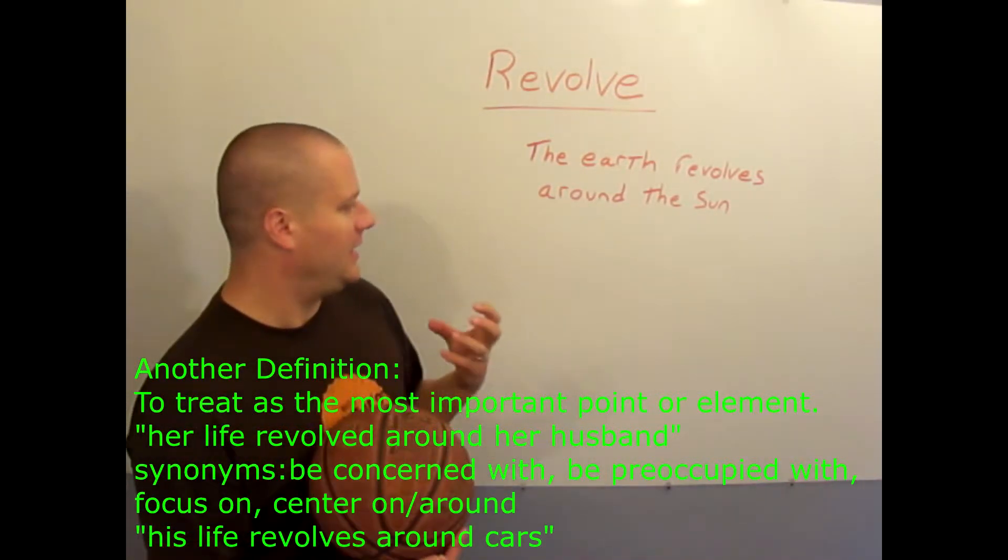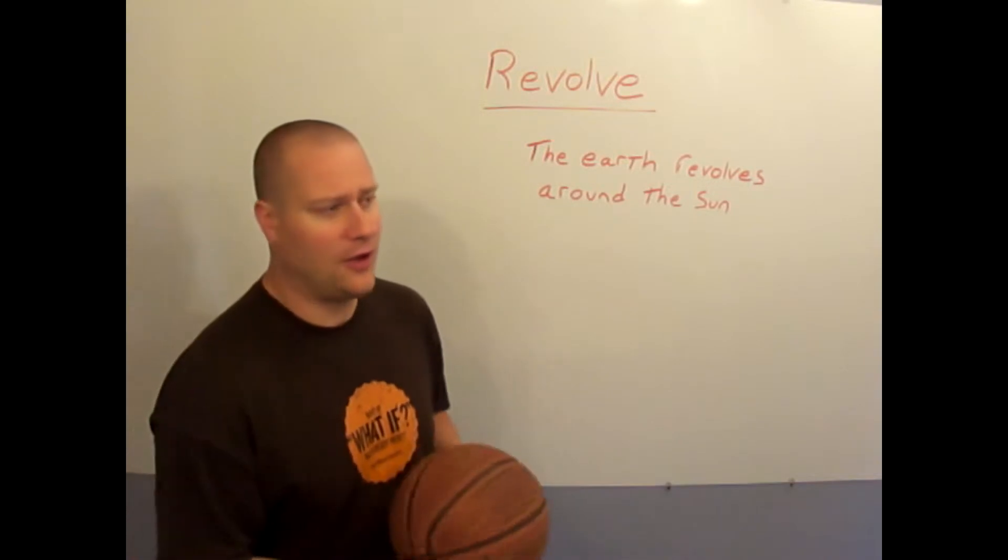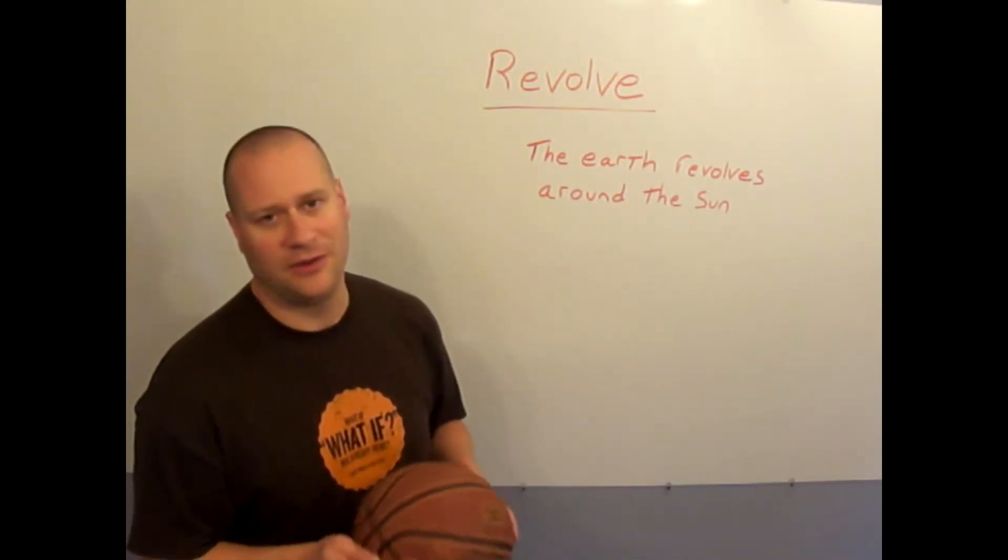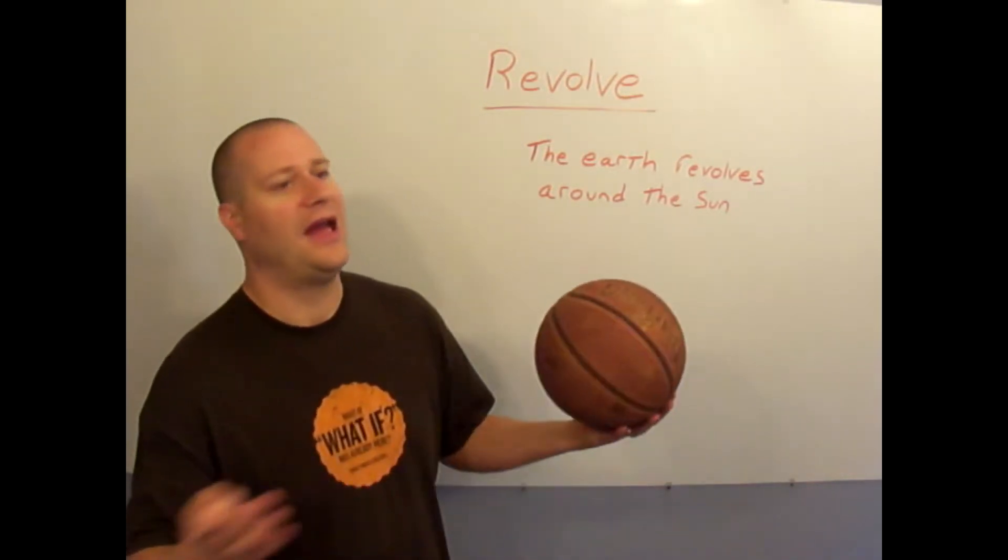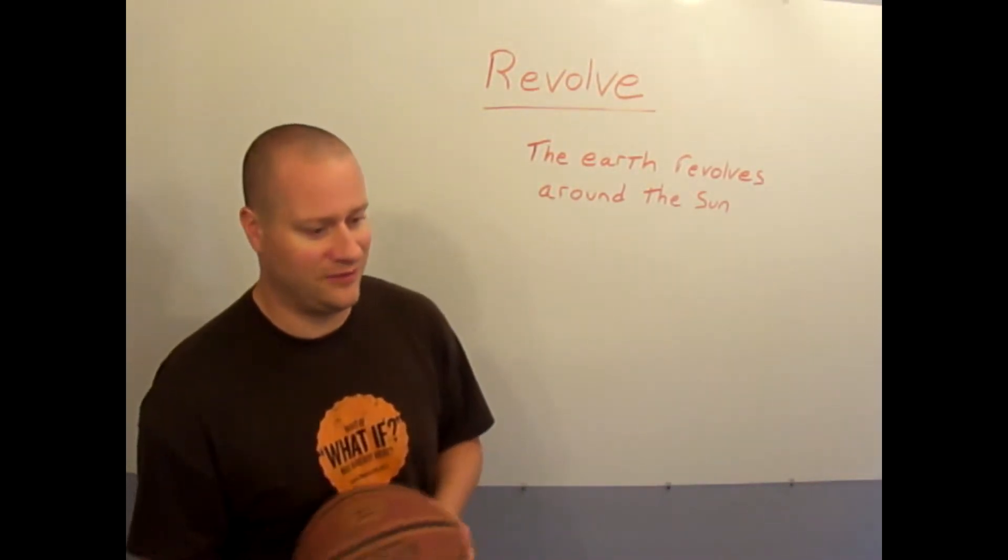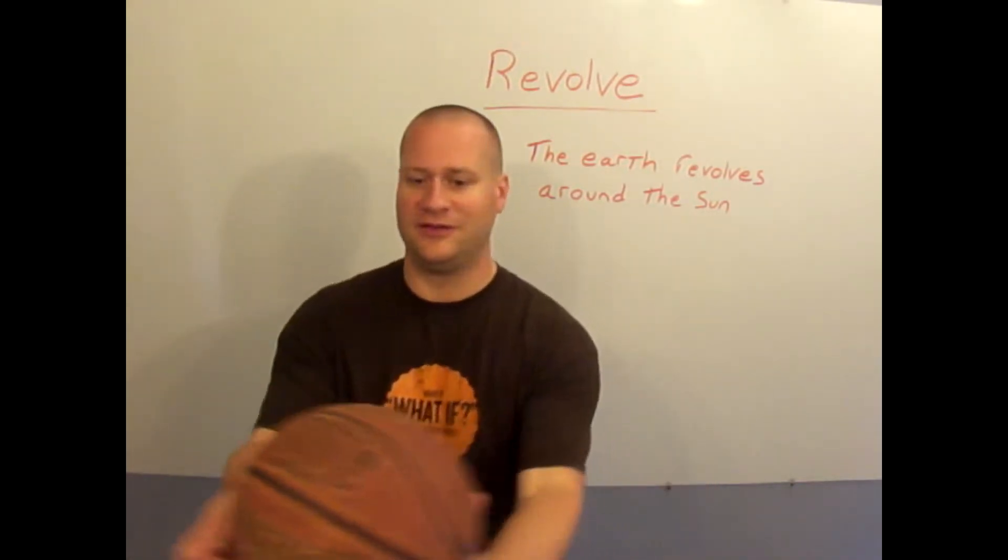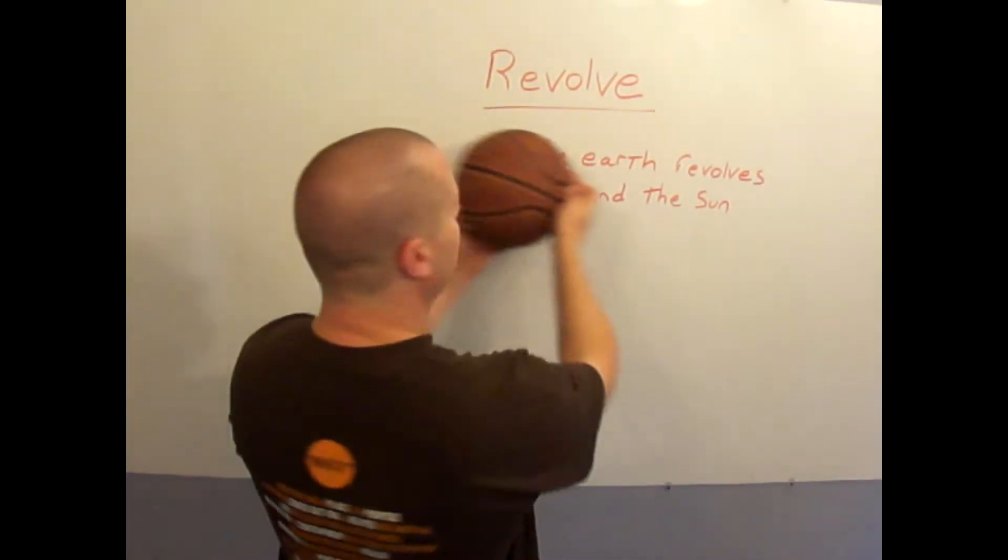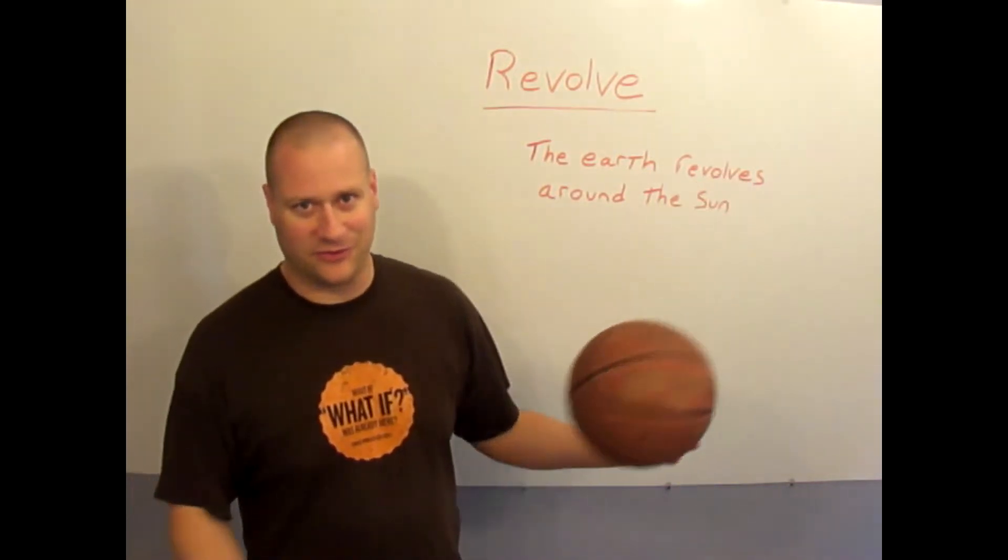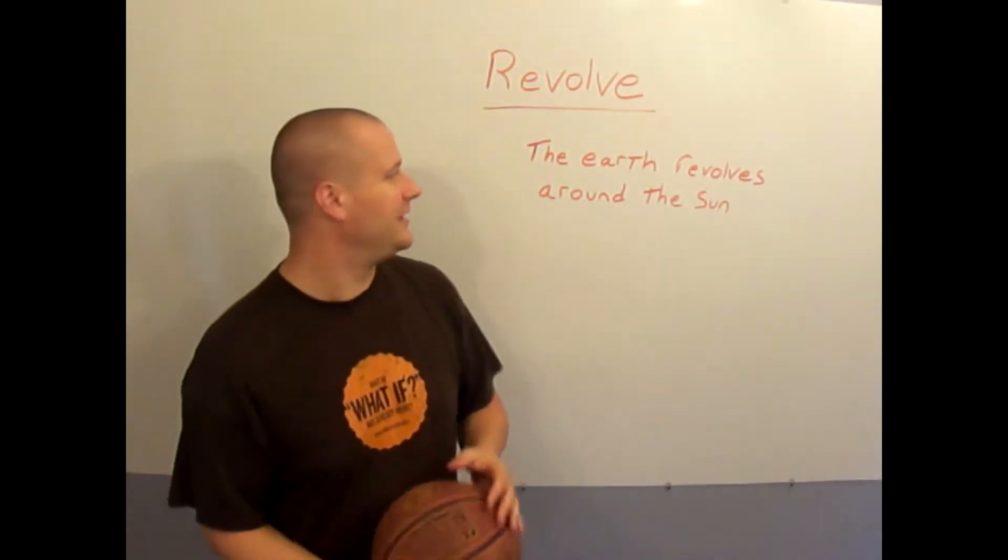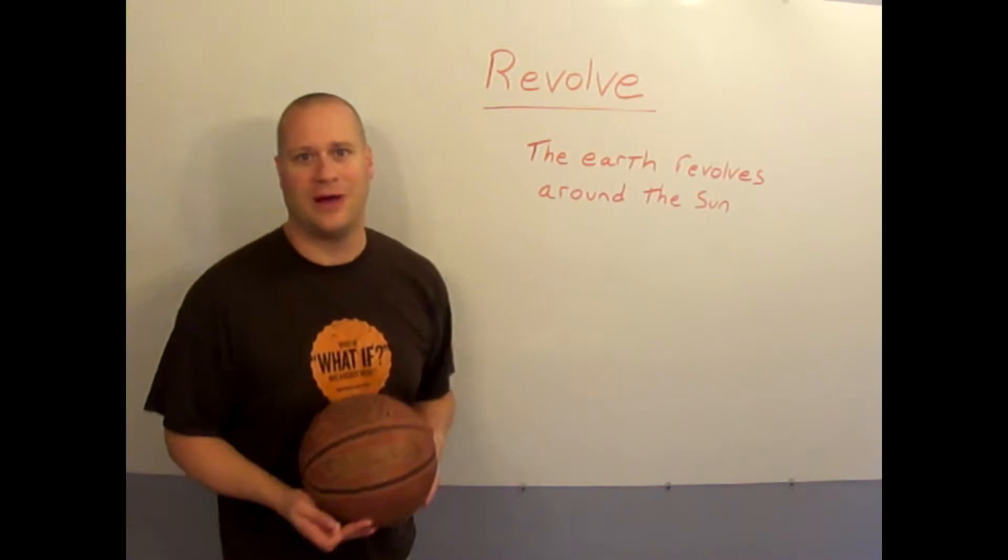When we talk about something revolving around something else, it's like saying it's the most important, it's the biggest, it has the most pull in someone's life or the most gravity. Someone who's self-centered, we would say something like, oh they think the earth revolves around them. They think everything revolves around them as if they're the center of the universe and the sun, the moon, the stars and everyone else revolves around them as having the most gravity. But we know that's not true. Everything in our universe revolves around the sun.